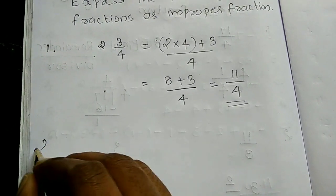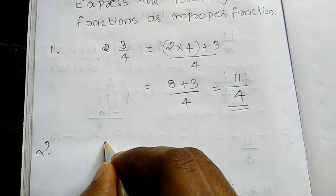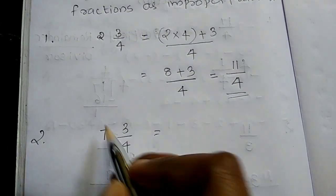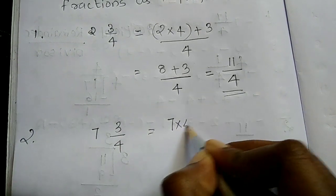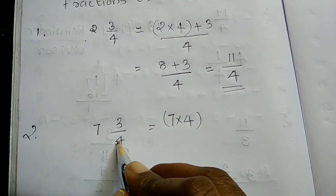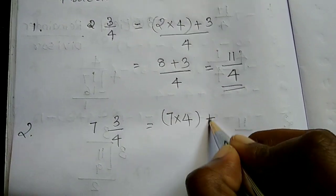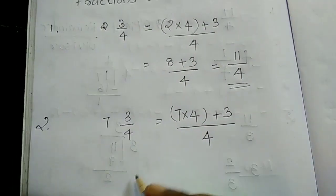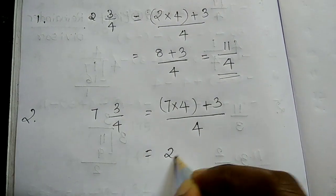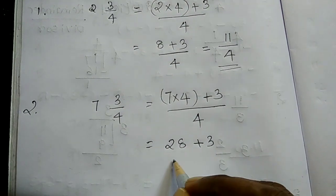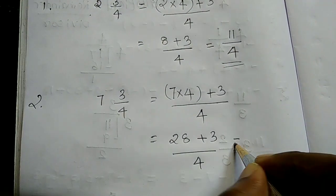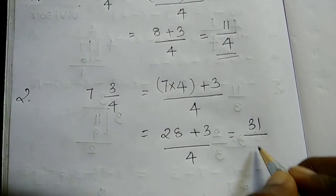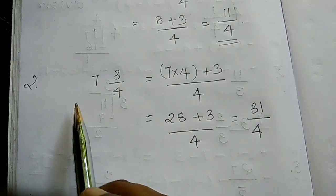Another one: 7 and 3/4. Write it as 7 into 4 plus 3, divided by 4. 7 into 4 is 28, plus 3 is 31, divided by 4. So the mixed fraction of 7 and 3/4 is 31 divided by 4.